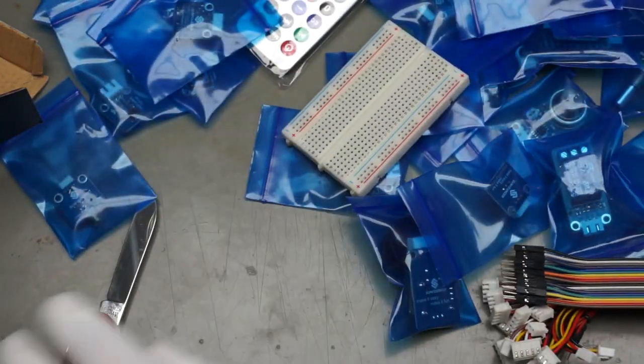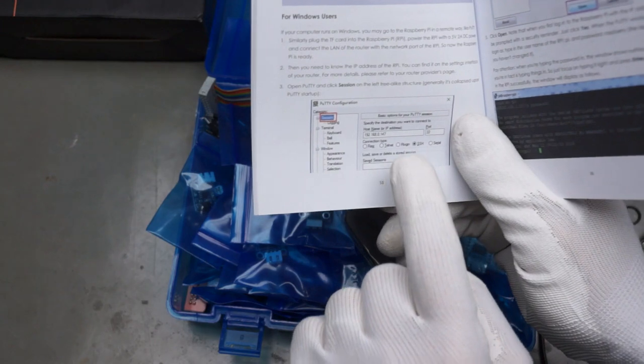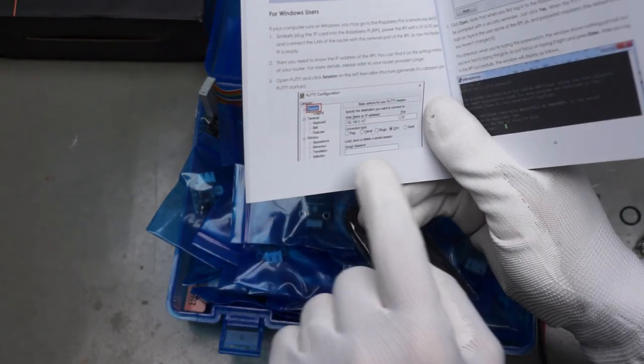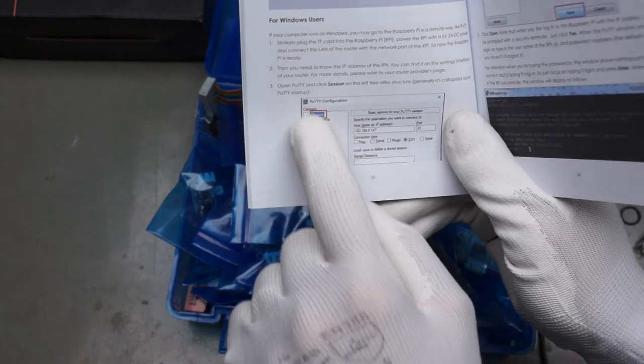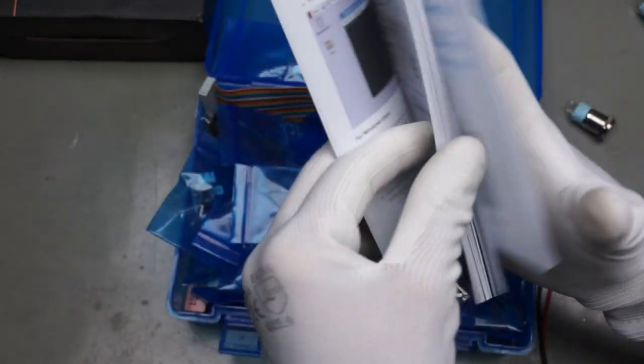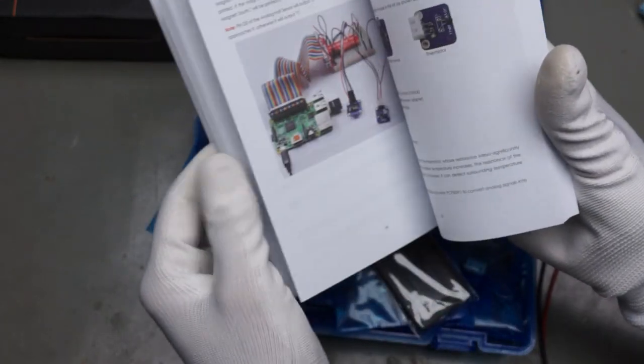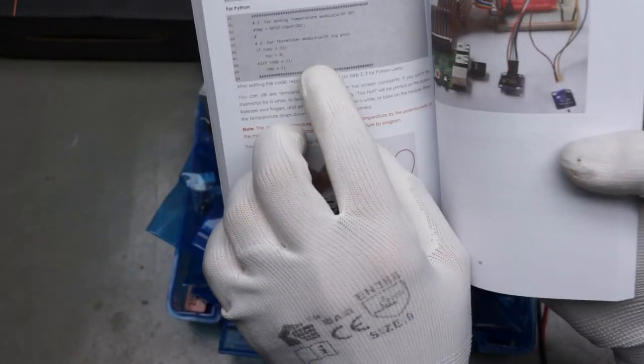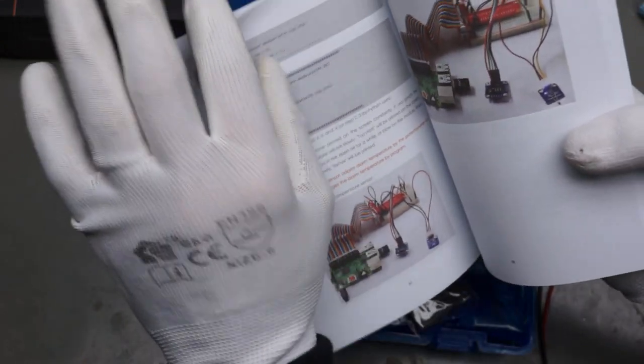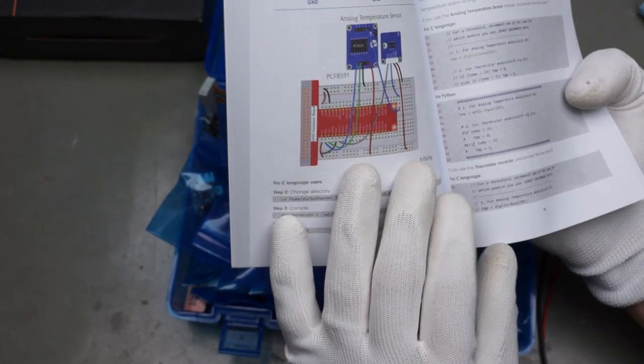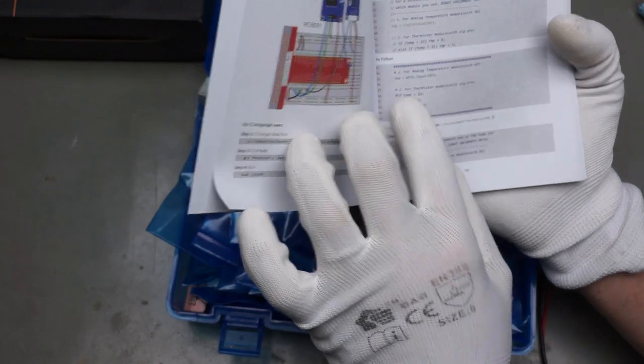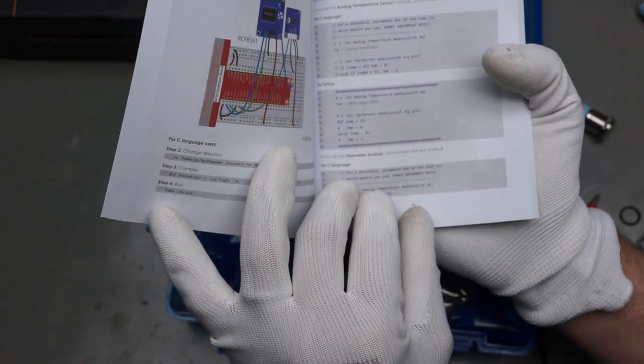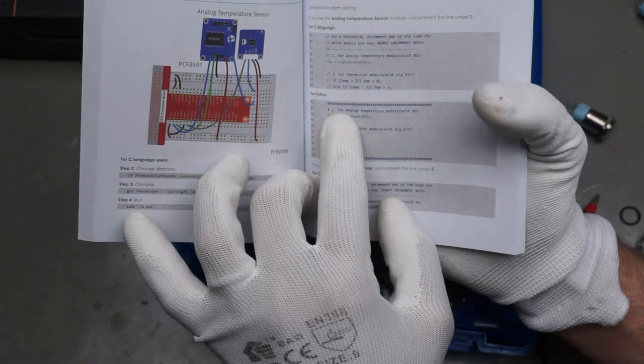So they explain many things around the Raspberry Pi. For example, also the PuTTY configuration and so on. And they have code examples in Python and in C. Here is C and here is Python.